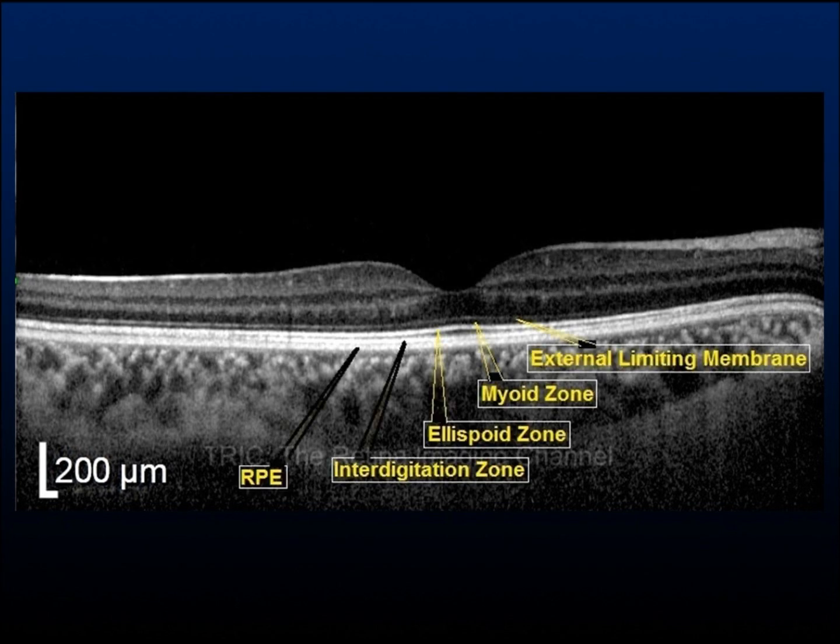Following the outer nuclear layer there is a thin hyperreflective line on OCT which is the external limiting membrane. The hyperreflective zone after the external limiting membrane is called the myoid zone. After that there is a thicker and more prominent hyperreflective band which is called the ellipsoid zone. This is the same band which was previously called the inner segment–outer segment junction; however, the current understanding is that it should be named ellipsoid zone.